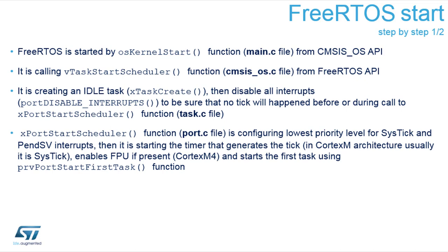FreeRTOS is started by calling OS kernel start, typically in main.c. Once you initialize at least one task and call OS kernel start, it begins scheduling. Internally it calls vTaskStartScheduler from the native API, which should never return. It creates the idle task, sets up the timer task if opted for, and then calls the port start scheduler, which generates the first context switch and chooses the first active task to run.